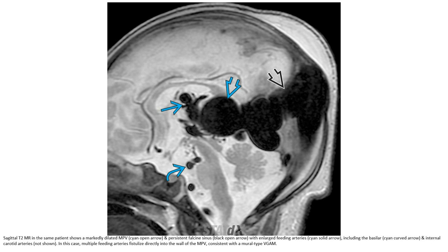CT angiogram in the same patient shows a markedly enlarged median prosencephalic vein and persistent arteriovenous shunting with large feeding arteries, including basilar and internal carotid arteries. In this case, multiple feeding arteries fistulate directly into the wall of the median prosencephalic vein, consistent with the mural type.